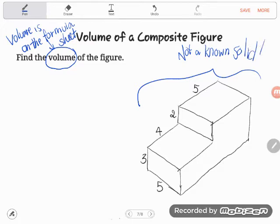The deal here is even though you don't know this particular solid, it is what we call a composite figure. It is composed of known solids, and in this case it looks like we have a couple of boxes stacked one on top of the other.